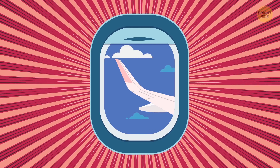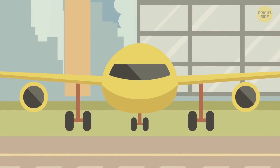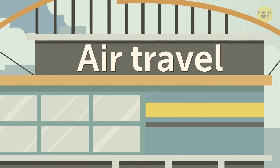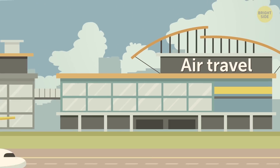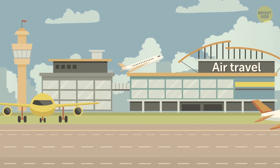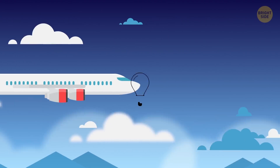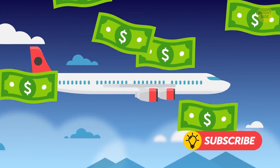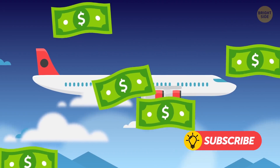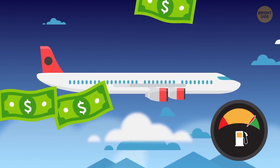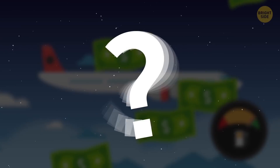So, about those cornerless windows. Although it's been around since the 1920s, commercial air travel didn't really take off until the 50s. That's when airplanes started to fly at higher altitudes. It saved airlines tons of money because up there, the air is significantly less dense and aircraft use less fuel.